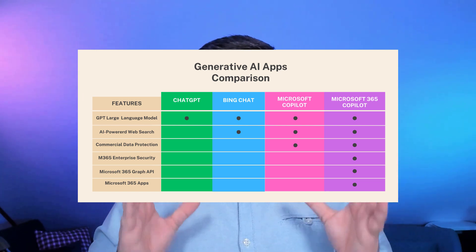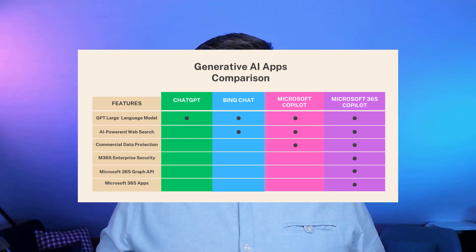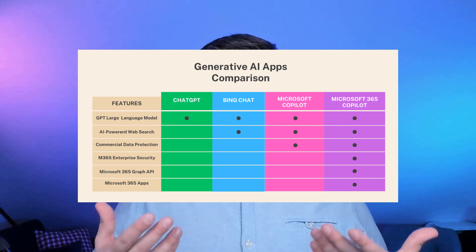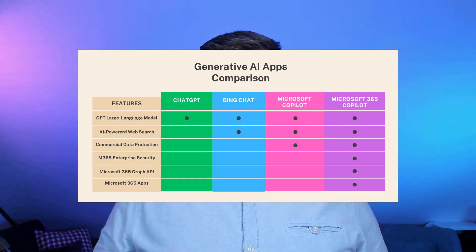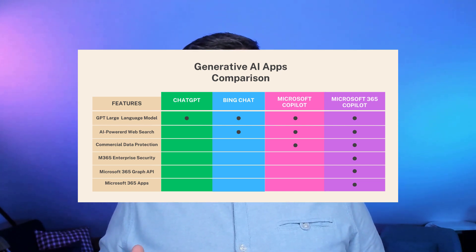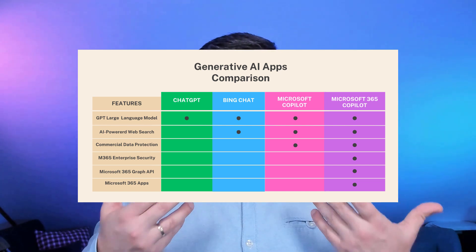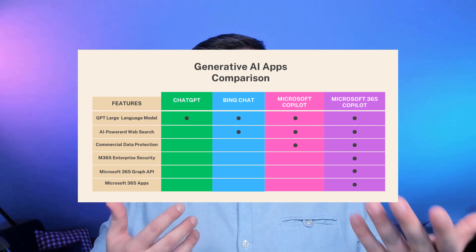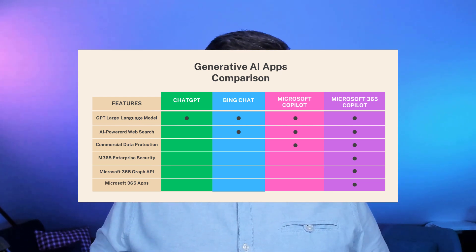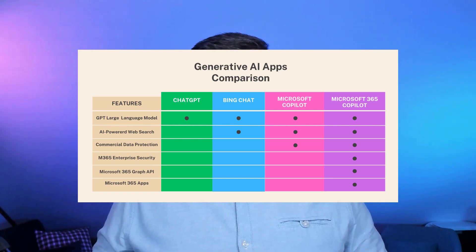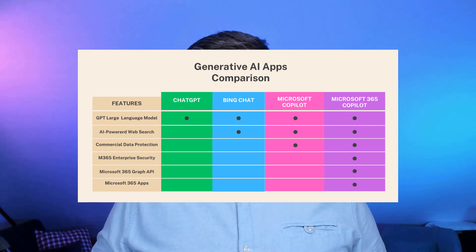All of them use large language models. So you can be sure that whether you're using ChatGPT, BingChat, or any format of Copilot, you will have the possibility to use prompts and have an almost natural language conversation with this AI tool that will help you answer your questions, prepare your documents, or help you gather some knowledge.